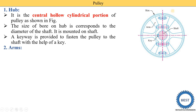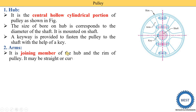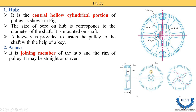The second component is the arm. The number of arms required depends on the size and capacity of the pulley. It is the joining member between the hub and the rim of the pulley, and it may be straight or curved. In this diagram we see a straight arm, and in this other diagram the arm is curved.